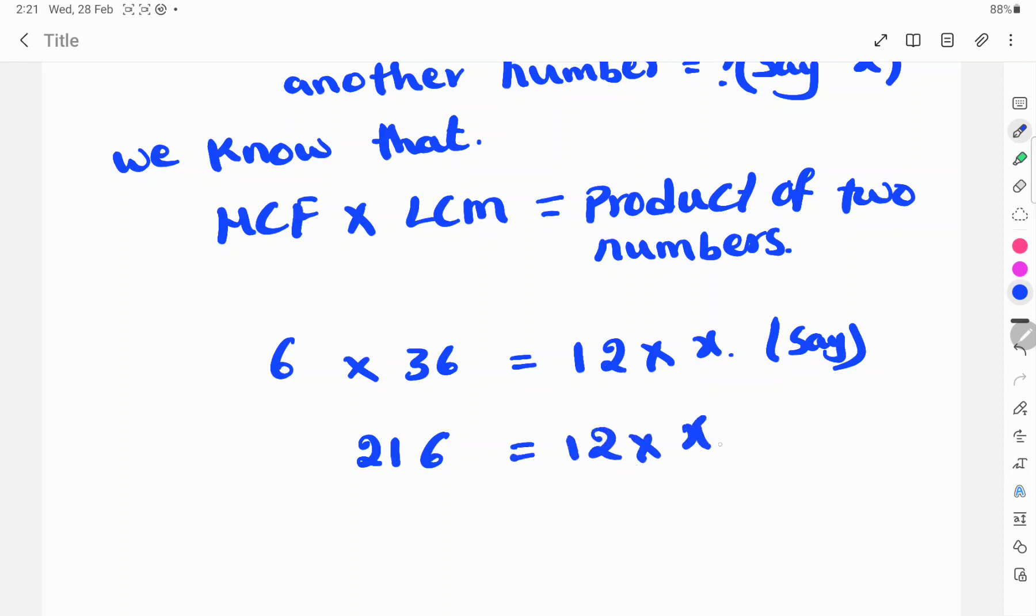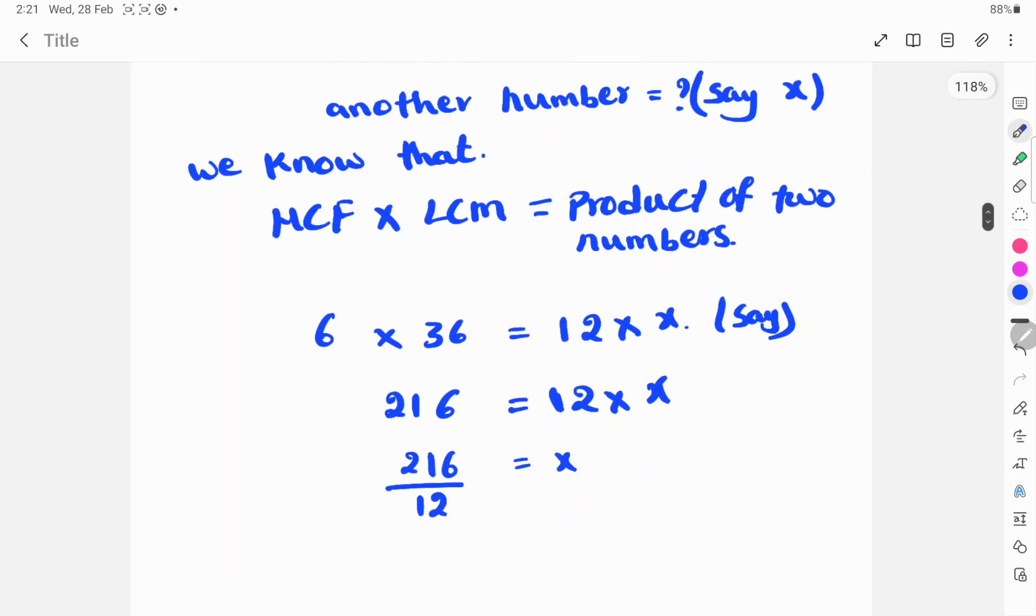Here 12 is multiplied with X. So this 12 is moved to the left hand side, then divided. 216 divided by 12 equals X.